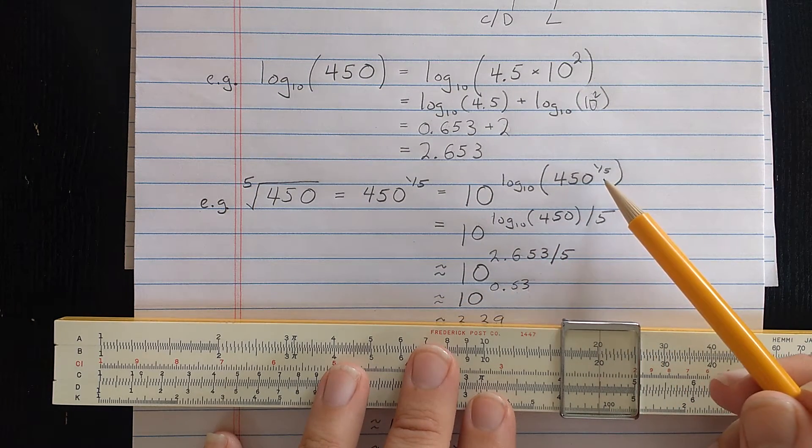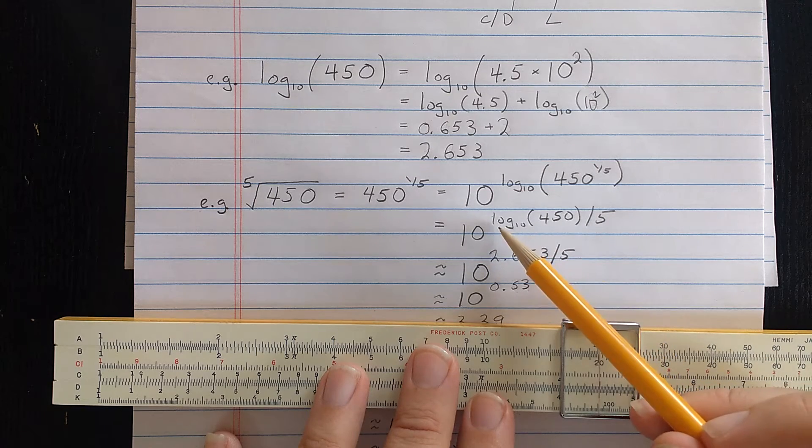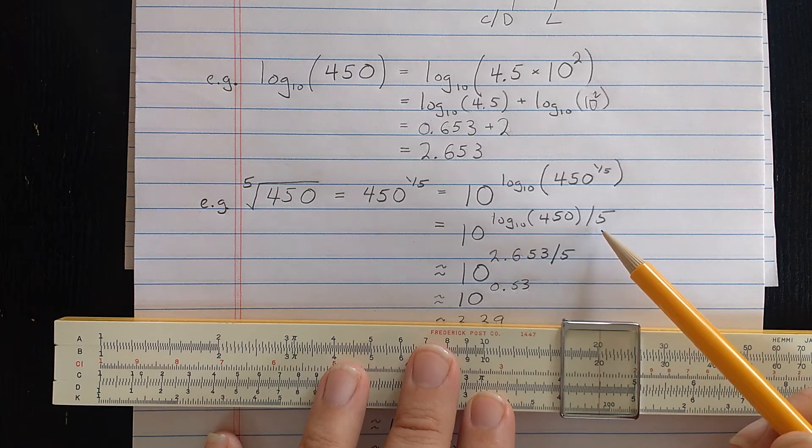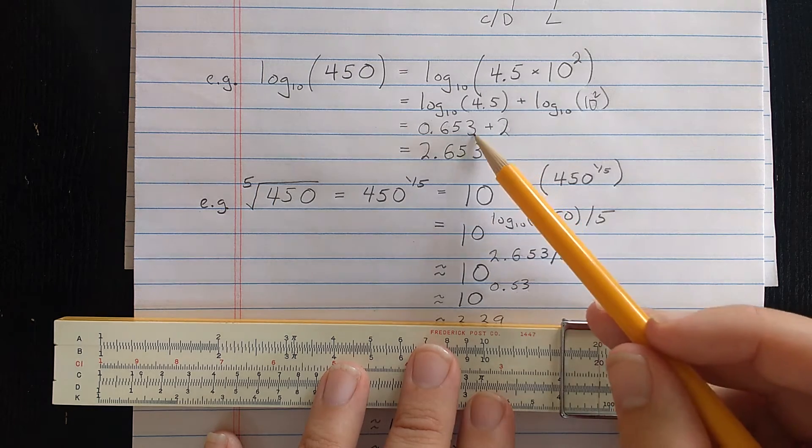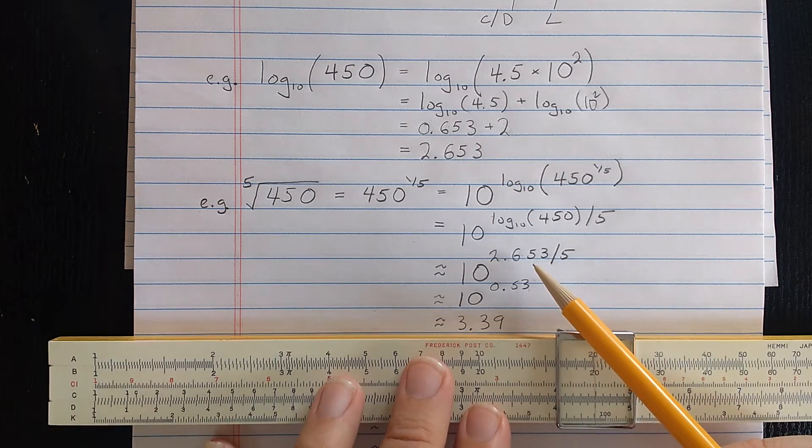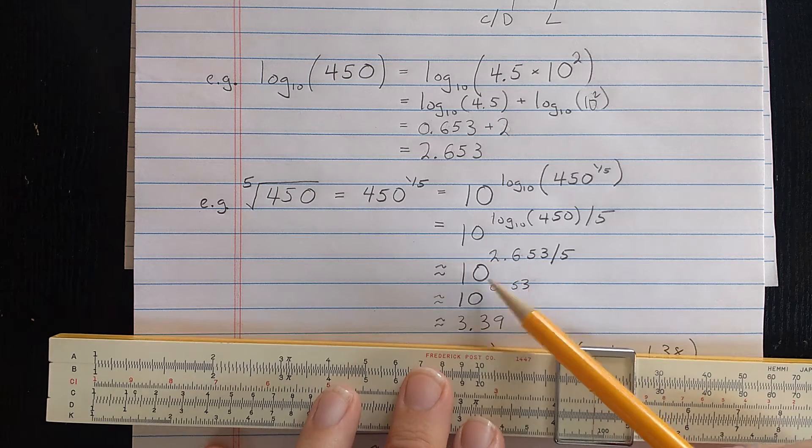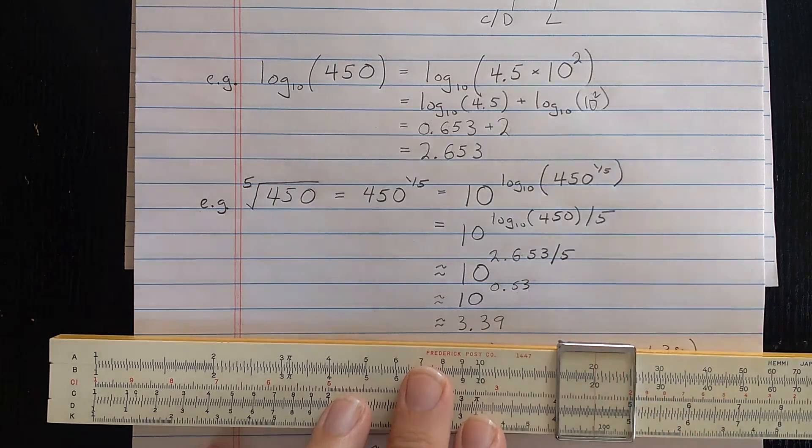So using the rules for logs, that one-fifth can come outside. So that should be the log with base 10 of 450 divided by 5. Of course, I already computed that log. That log is 2.653. So I've reduced the problem right now to computing 10 to the 2.653 over 5.